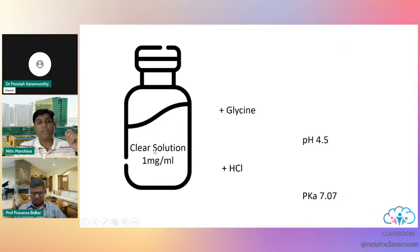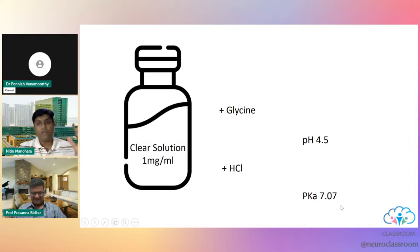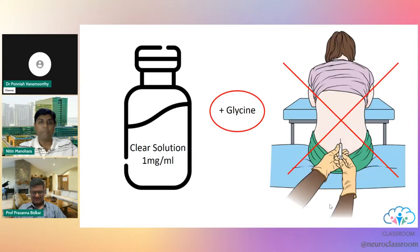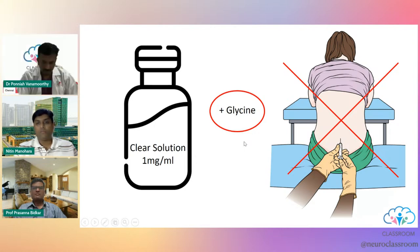The reconstituted solution is a clear 1 mg/ml solution containing a preservative — glycine — with a pH of around 4.5 and a pKa of around 7.07, close to body pH, meaning more drug is in the non-ionized state for effective action. Very importantly, because it contains glycine, which has neurotoxic properties, remifentanil cannot be used in neuroaxial blocks — do not use it as an additive epidurally or intrathecally.